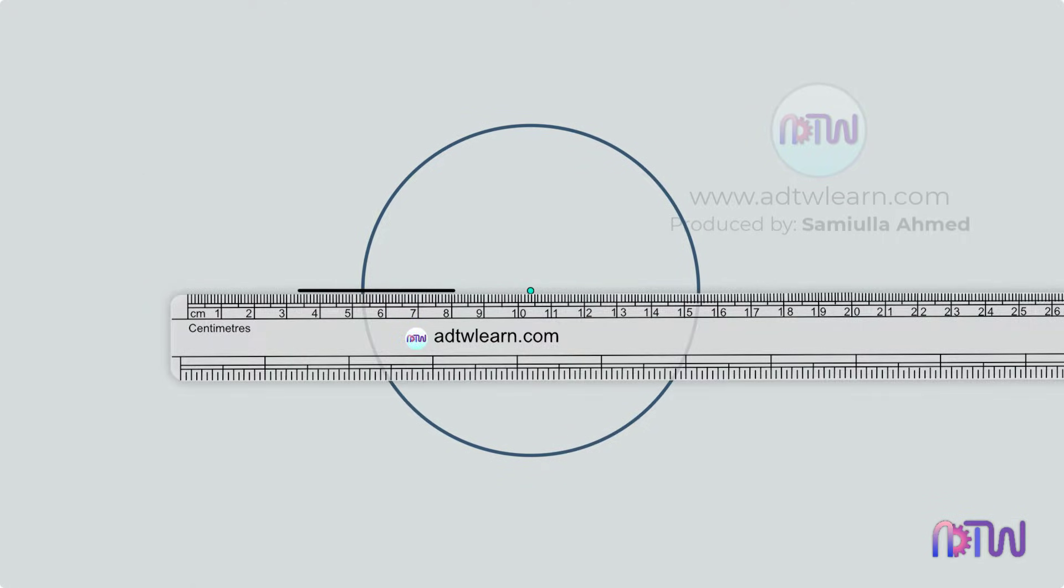First, we will draw a circle of some radius. This method works for a circle of any radius. Draw a horizontal line passing through the center of this circle.